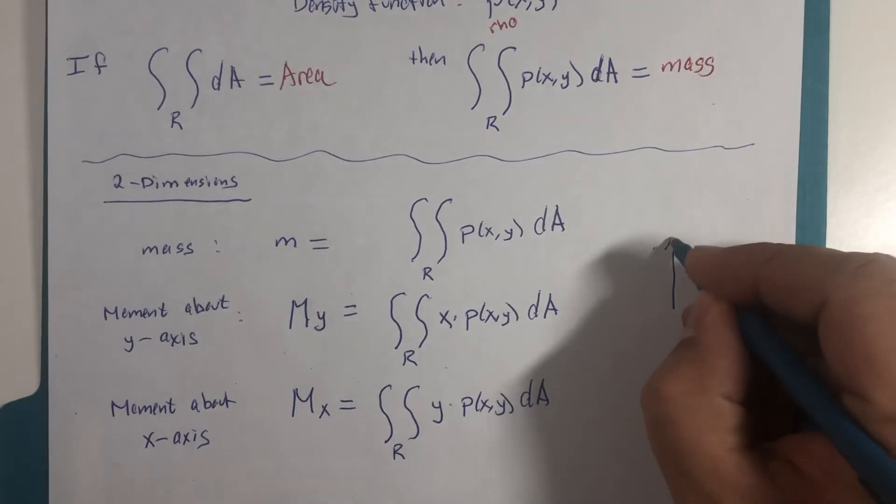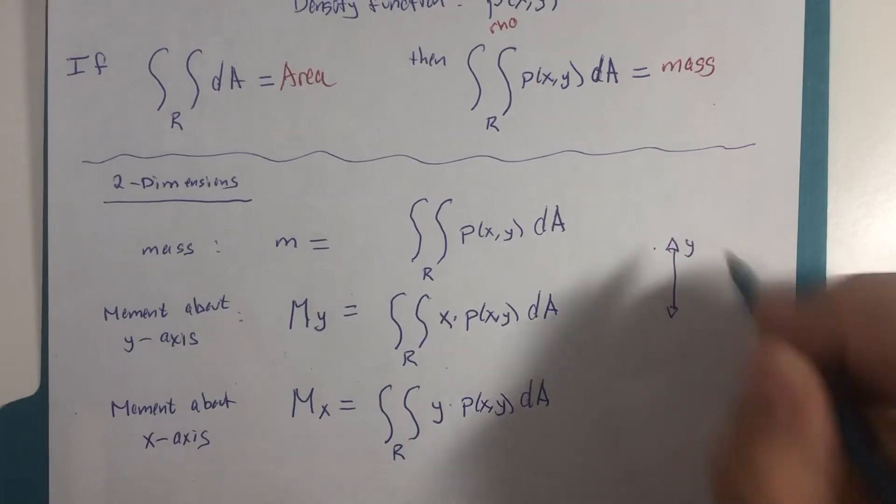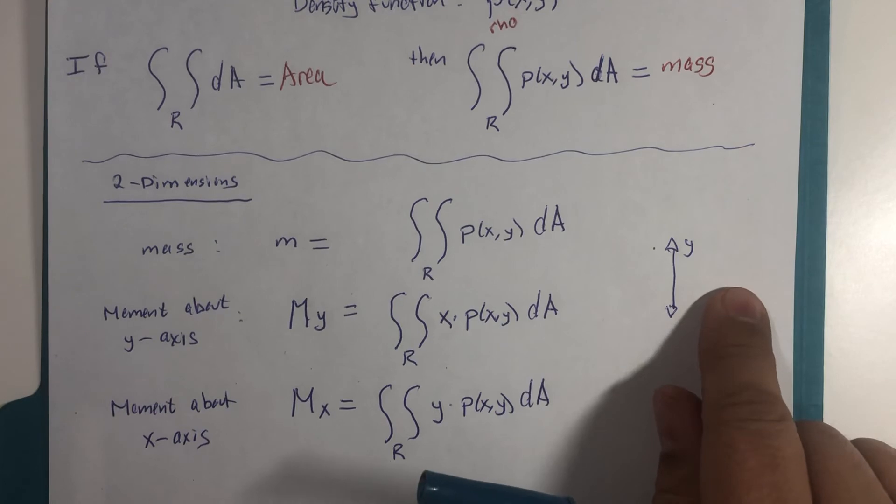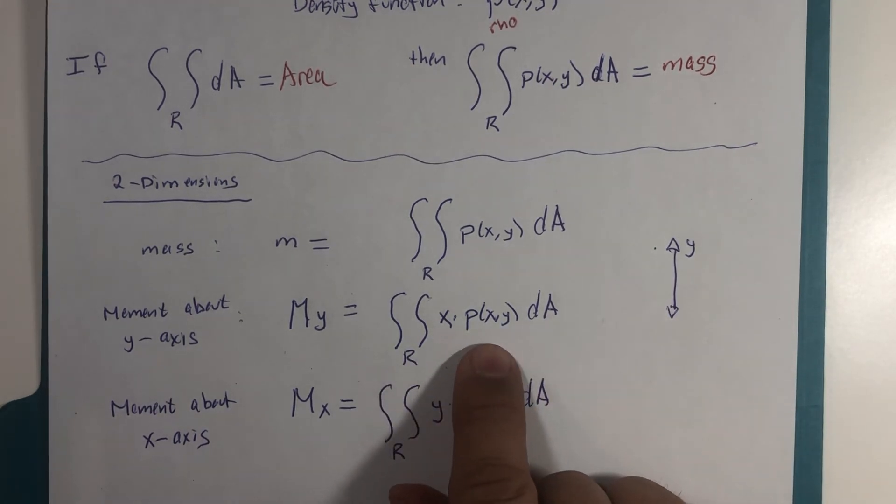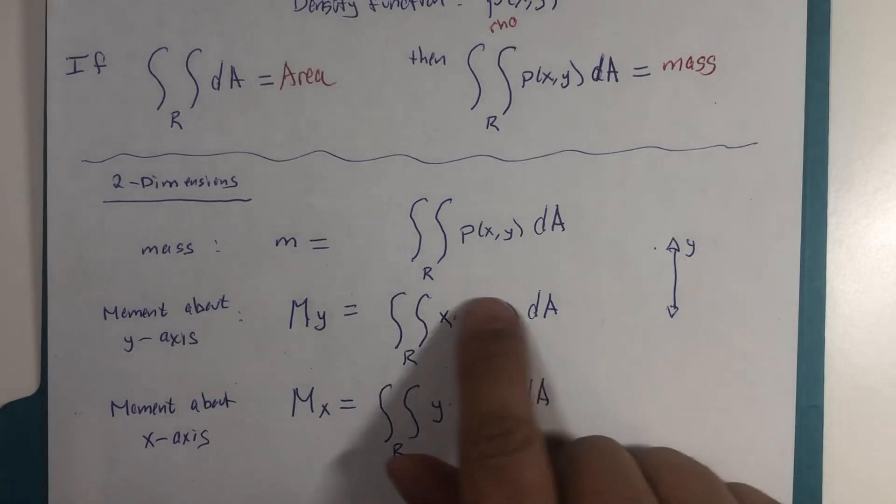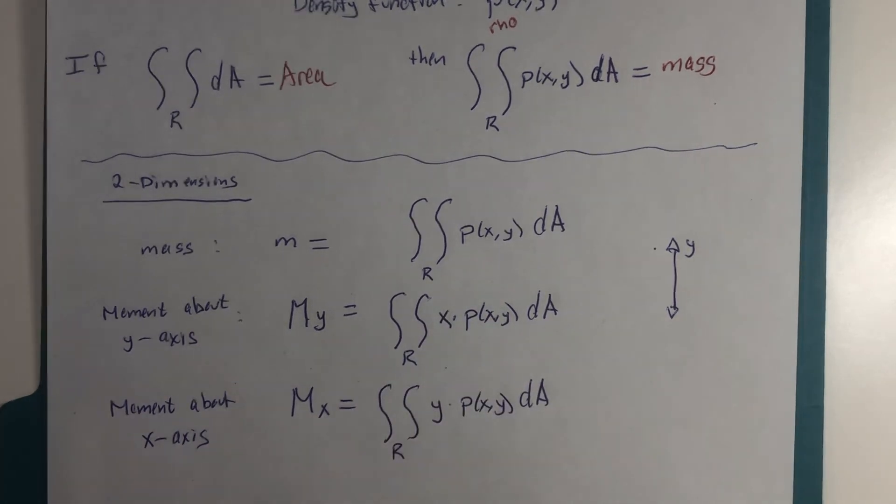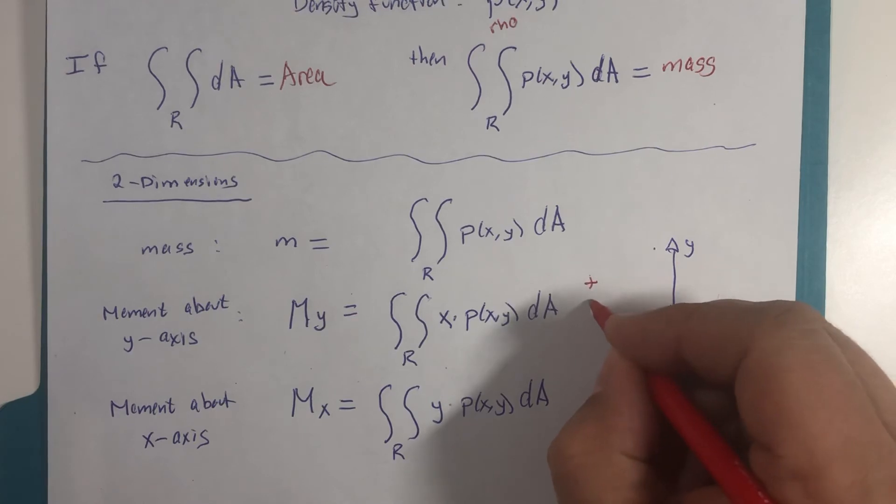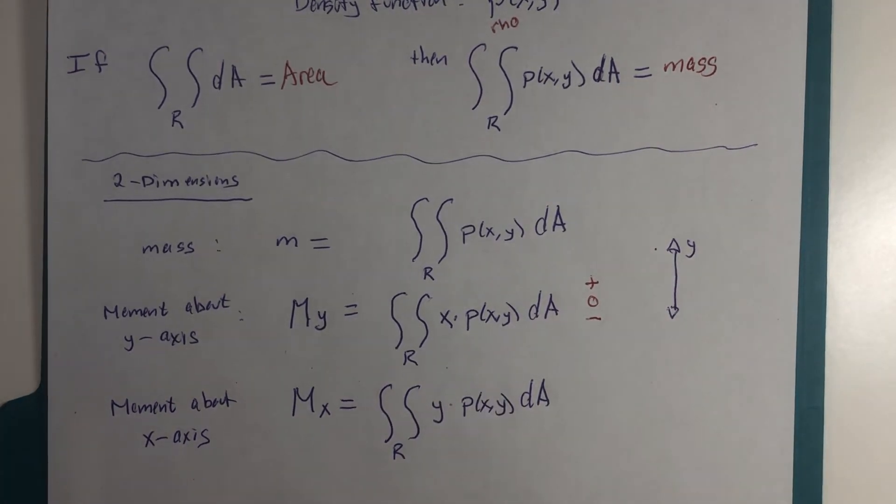The moment about the y-axis—remember the y-axis separates the left side from the right side—so we see x multiplied by density. This calculation will give you your moment. We can actually get values that are positive or zero or negative when we do this calculation.